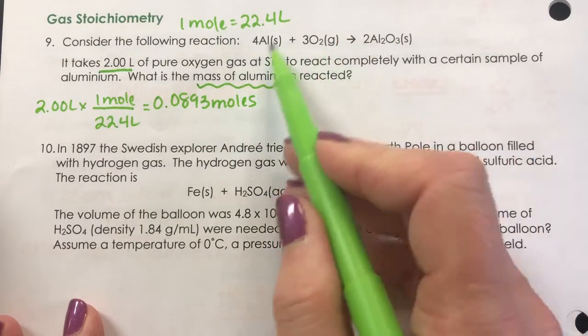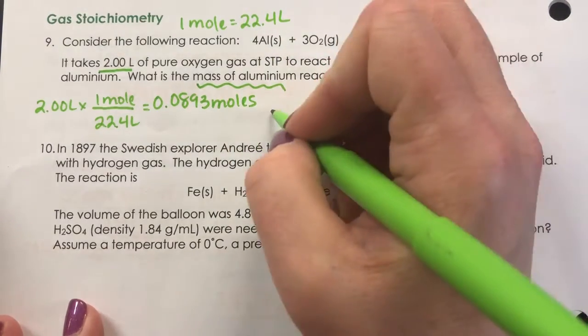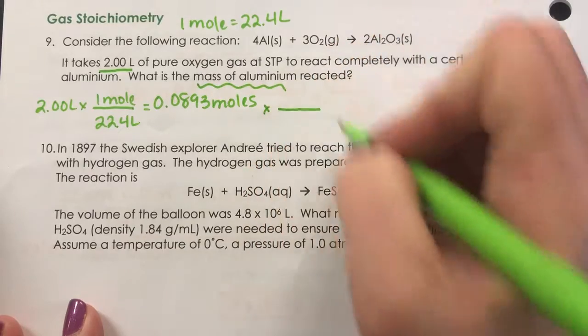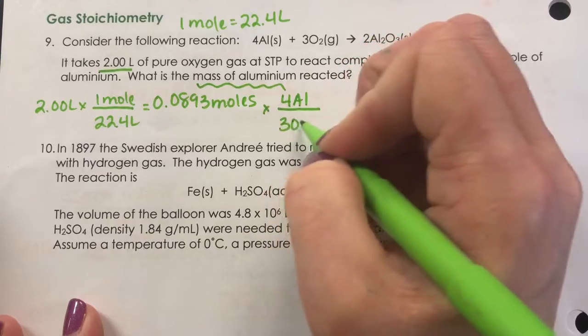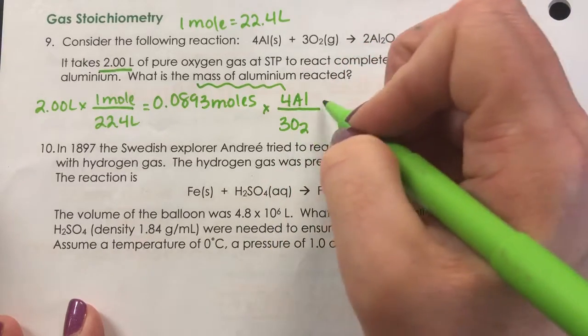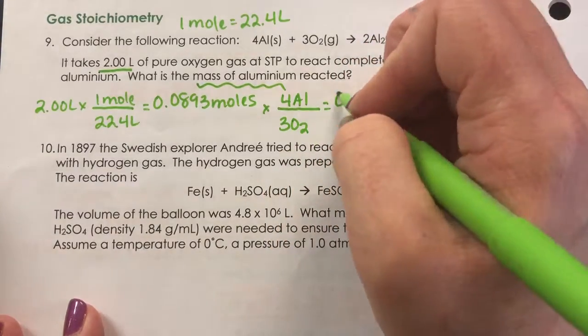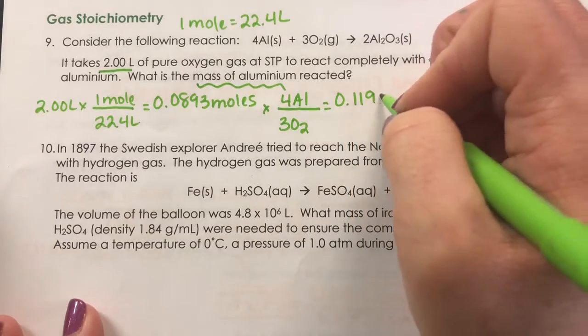We're trying to figure out what mass of aluminum is going to react with that. So we need our second step, which is the mole ratio. There's four aluminum for every three oxygen, which means that there's 0.119 moles of aluminum.